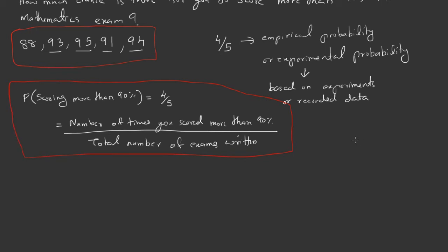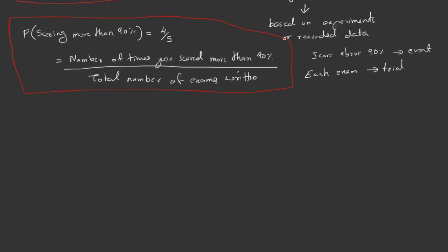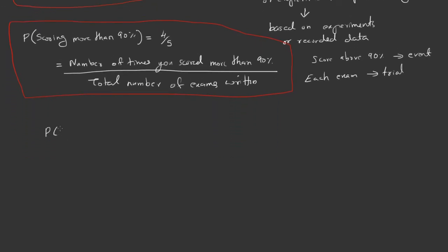We need to generalize this equation. For this, I am calling score above 90 percent an event and each exam a trial. Therefore, this formula can be generalized as: probability of an event equals the number of trials in which the event happened divided by total number of trials.